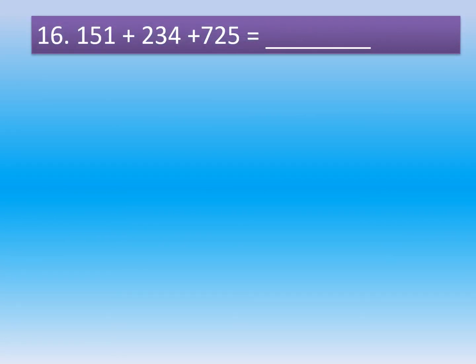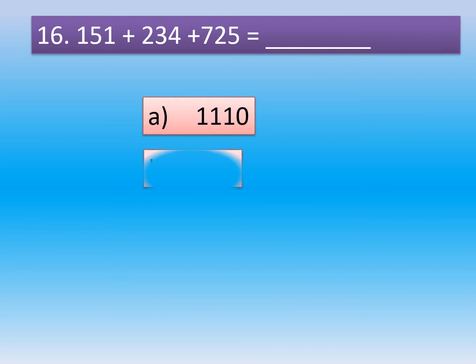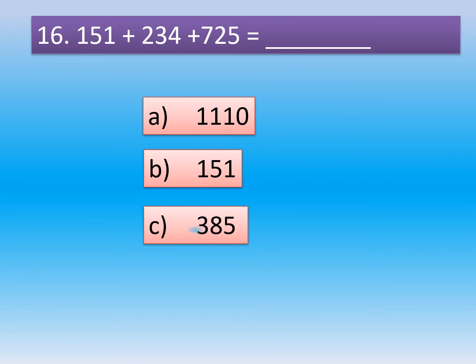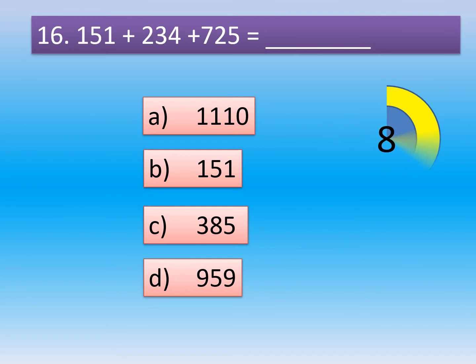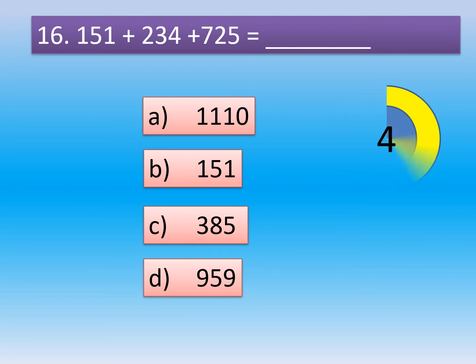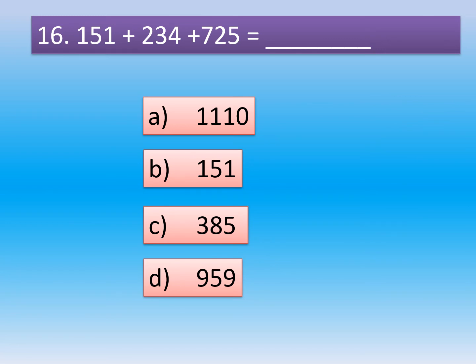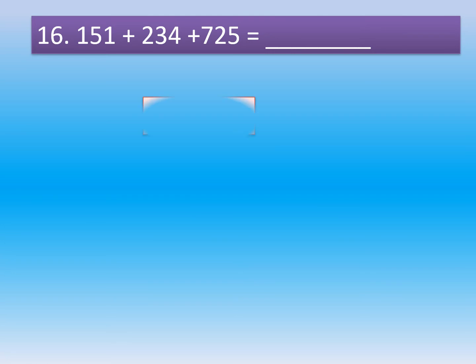Question number 16. 151 plus 234 plus 725 is equal to dash. Option A: 1110. Option B: 151. Option C: 385. Option D: 959. The correct option is Option A: 1110.